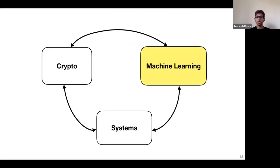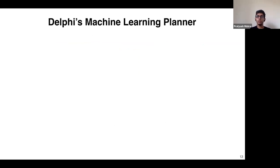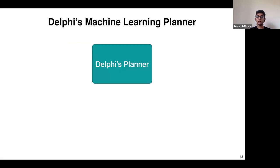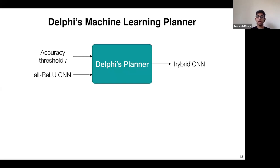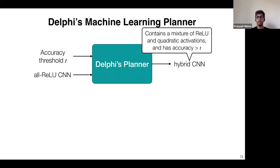To solve this problem we turn to machine learning techniques. We developed a planner for Delphi which takes a minimum accuracy threshold T and a pre-trained all-ReLU network, and outputs a hybrid network containing a mixture of ReLU and quadratic activations, while ensuring accuracy meets the minimum threshold T.